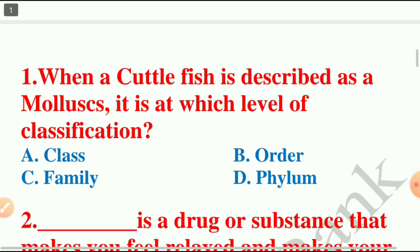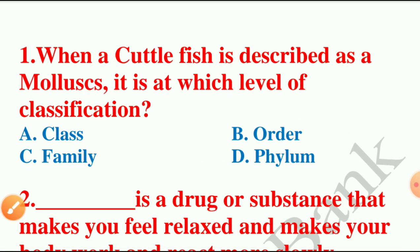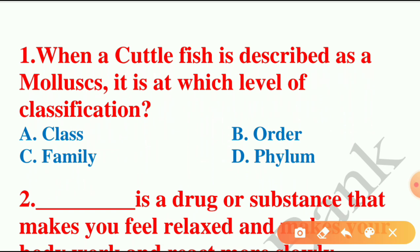Let's start with the session. Question number one: when a cuttlefish is described as a mollusk, it is at which level of classification? The options are class, order, family, or phylum. The answer is option D — phylum. Phylum is the level of classification when cuttlefish is described as a mollusk, and the phylum group can be further divided into smaller groups known as classes.